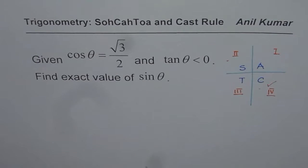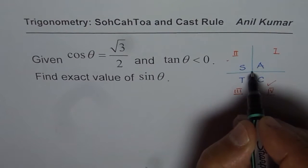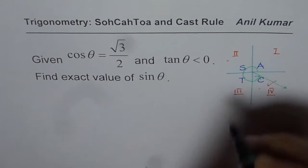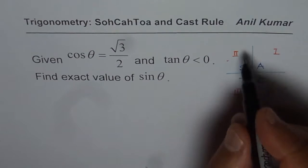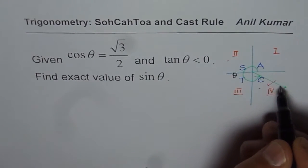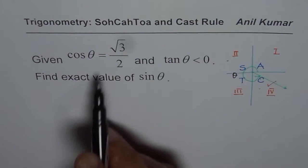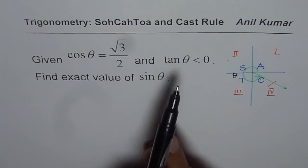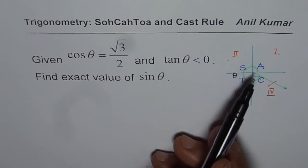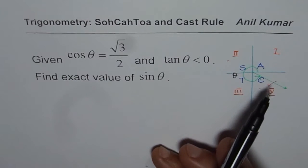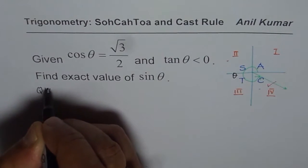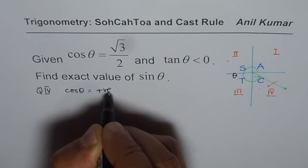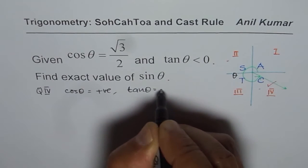That means we are talking about the angle being in quadrant four. This is the principal angle θ. We draw the principal angle at random in quadrant four. From those two conditions — cosine positive and tan negative — the principal angle must lie in quadrant four.